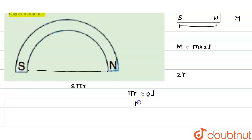calculate the new magnetic moment M', it is m times the distance between the two poles,